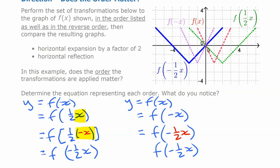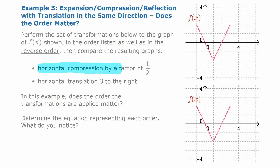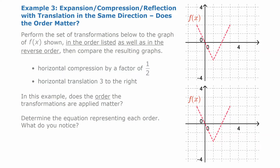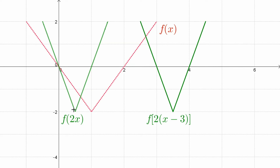In the third case, we're combining an expansion, compression, or reflection with a translation in the same direction. Specifically, we'll do a horizontal compression by a factor of one-half and a horizontal translation of three to the right, in both orders. First in the shown order: we do the horizontal compression, cutting all x values in half by changing x to 2x. Then we do the horizontal translation of three to the right, replacing x with x minus 3. Since the 2 is already there, it becomes 2 times the entire quantity x minus 3 — in brackets.